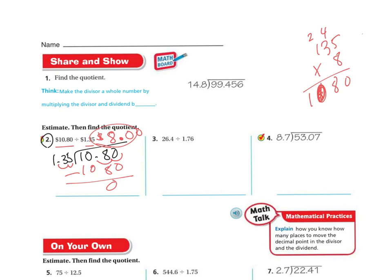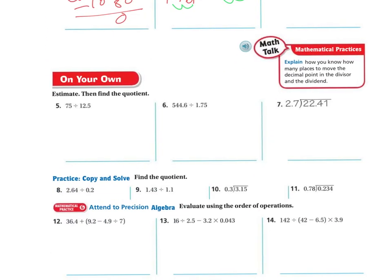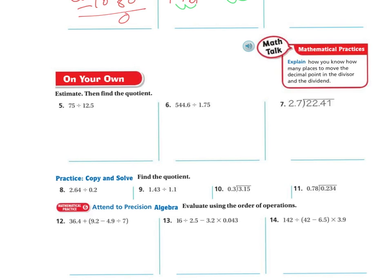Let me set up a couple more with you. We have 26.4 divided by 1.76 — I move the decimal two spaces, so this has to move two spaces too. There's nothing there, so I add a zero, and my decimal goes there. On this one: 75 divided by 12.5. I move the decimal one space; at the end of a whole number it's technically a decimal, so I move this one over too and add a zero. My decimal goes there. And on the last one, moving two spaces means this goes two spaces — my decimal goes right there.